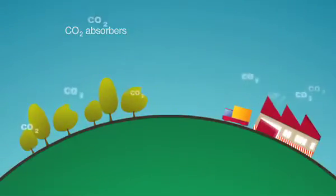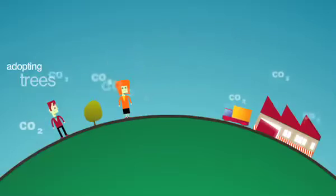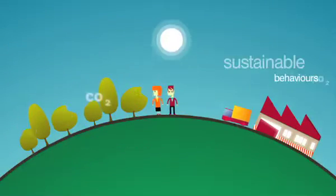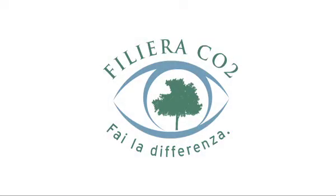Our programs allow you to offset your company's CO2 emissions by carrying out forestation work, adopting trees, using organic production methods and behaving in a sustainable way. This means that you can certify your company with a filiera CO2 mark.